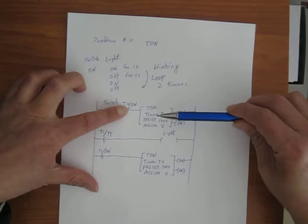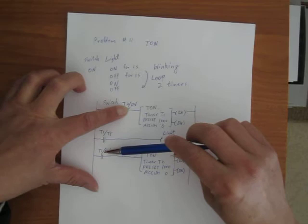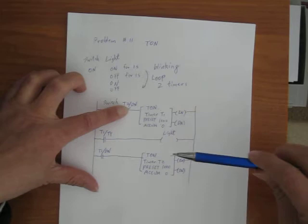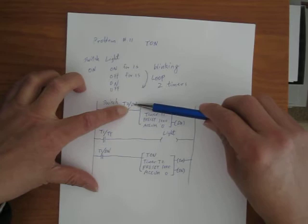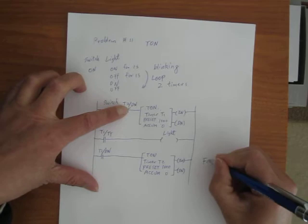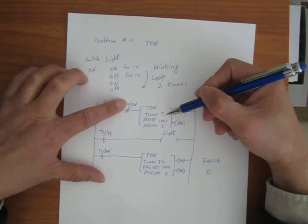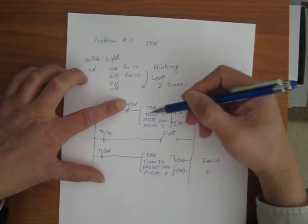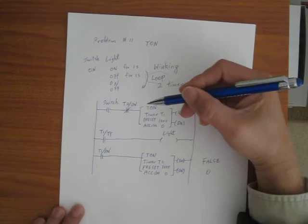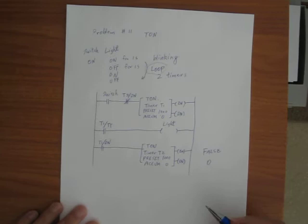After one second, T2 DN becomes true. NOT of true is going to be false, which turns T1 off. Once T1 turns off — almost in a millisecond — T1 DN becomes false. That turns T2 off. Once T2 turns off, T2 DN becomes false, becomes 0. So NOT of 0 becomes 1 again, and then it turns T1 on again. That's how we loop it.